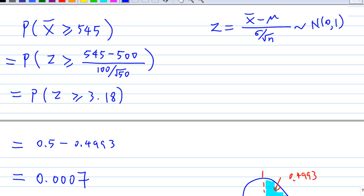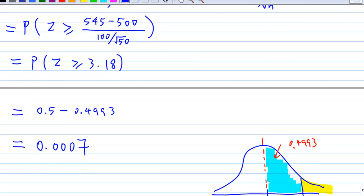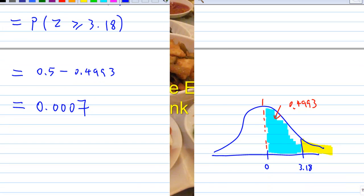The school has justified its claim because it is very rare to get x bar greater than or equal to 545. This school has produced a random sample of 50 students and found the average is 545. That finishes the solution.